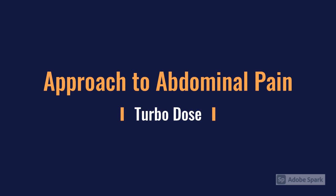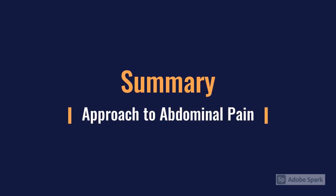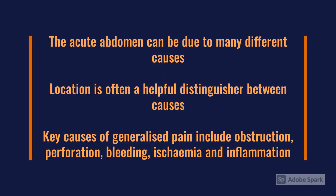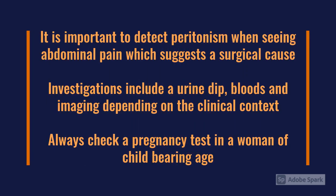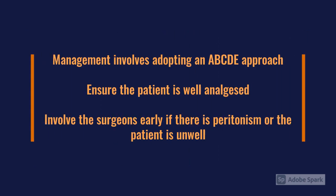To summarise: the acute abdomen has multiple causes; the location of pain is often helpful in distinguishing the most likely cause. Consider causes of severe or generalised abdominal pain including bleeding, perforation, ischaemia, and inflammation. Detect any peritonism as this suggests a surgical cause. Investigations include urine with a pregnancy test in all women of childbearing age, blood tests, and imaging based on the likely cause. Management follows an ABCDE approach, ensuring adequate analgesia and early surgical involvement if peritonism is present.